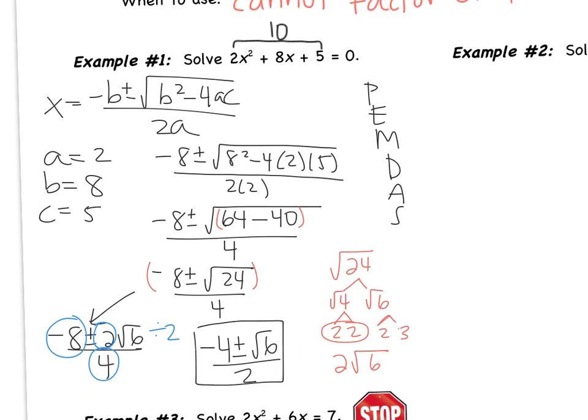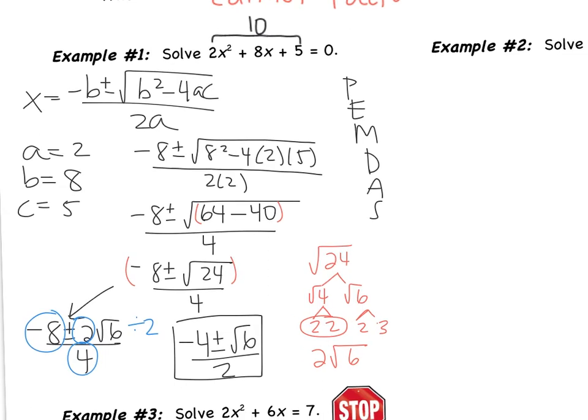Here are my two answers: negative 4 plus root 6 over 2, and negative 4 minus root 6 over 2 — two different answers. The quadratic formula will solve any quadratic: quadratics where you don't have a calculator, where they don't factor, where you can't take a square root. This will always work. Let's look at another example.